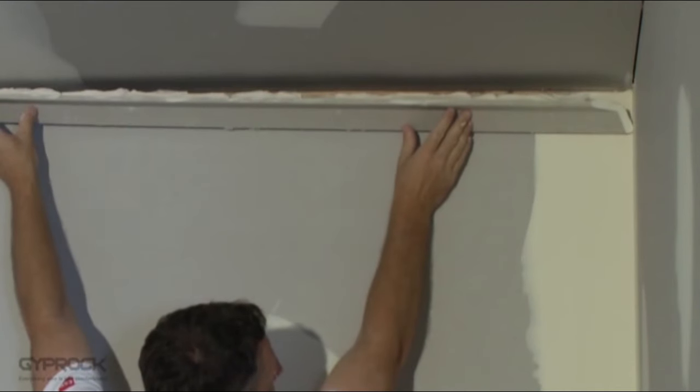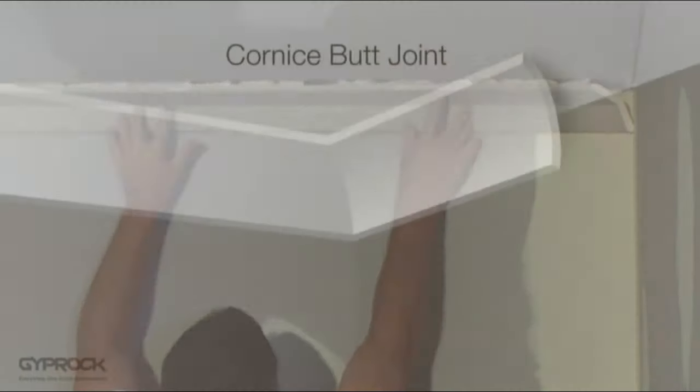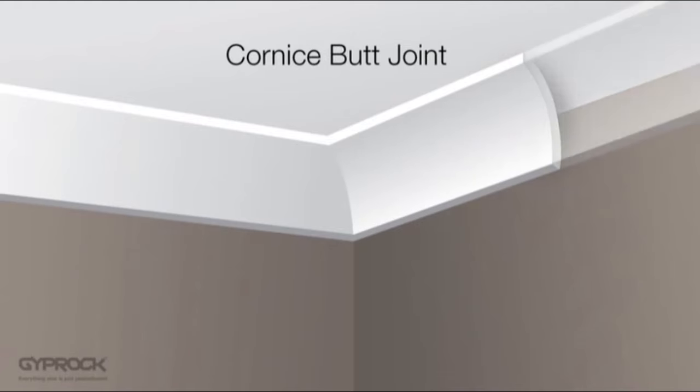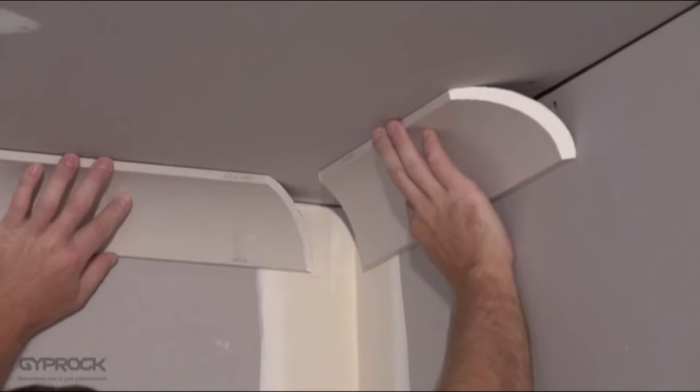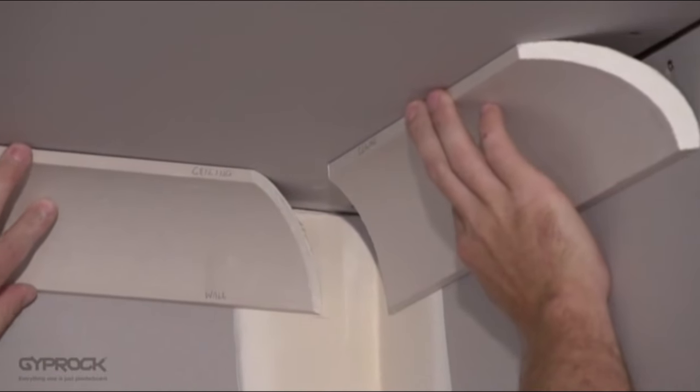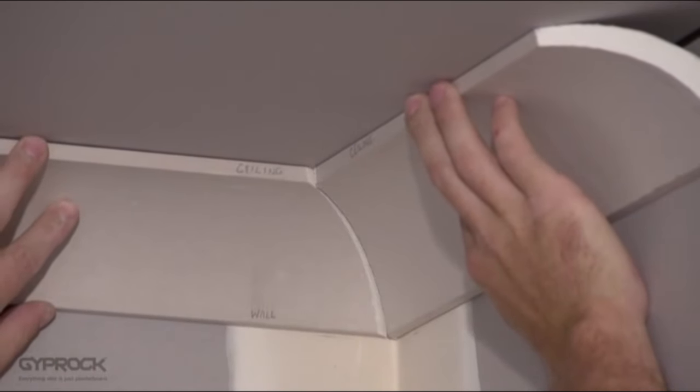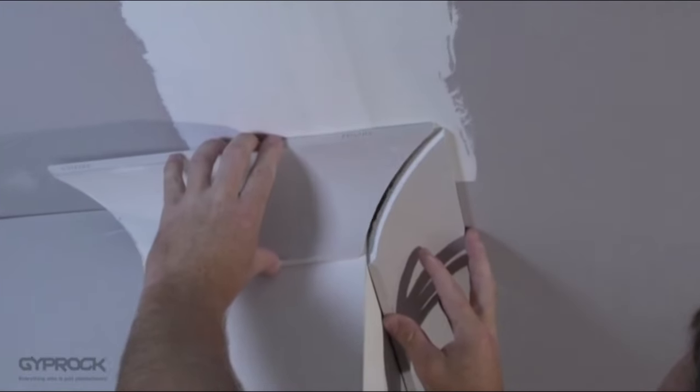Always try to use a single length of cornice for each wall but if it's unavoidable lengths can be joined together as a butt joint. Cutting cornice angles can be a bit tricky but if you follow these simple steps you'll have fewer problems. It's a great idea to have a few practice cuts before you get started.